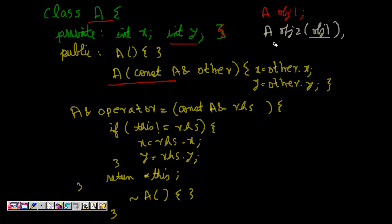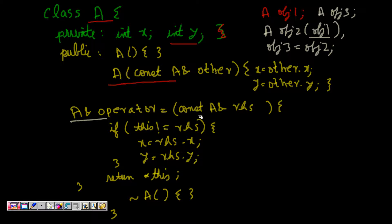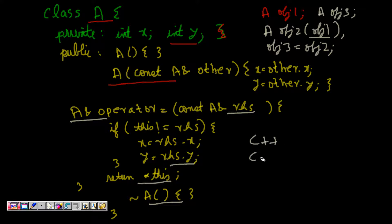Next, if we define 'A object3' and write 'object3 = object2', the assignment operator is called. Object2 is passed by reference as 'rhs'. We check that the same object is not being assigned to itself, then x becomes rhs.x, y becomes rhs.y, and we return the this pointer. The destructor is also generated. This is what C++ generates automatically.